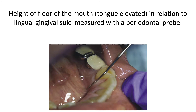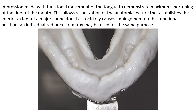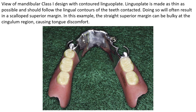The height of the floor of the mouth — with the tongue elevated — is measured in relation to the lingual gingival sulci using a periodontal probe. An impression made with functional movement of the tongue demonstrates maximum shortening of the floor of the mouth, allowing visualization of the anatomic feature that establishes the inferior extent of a major connector. If a stock tray causes impingement on this functional position, an individualized or custom tray may be used.